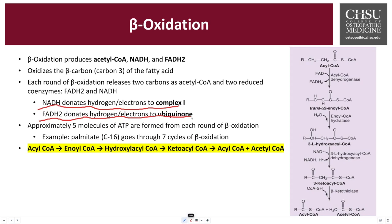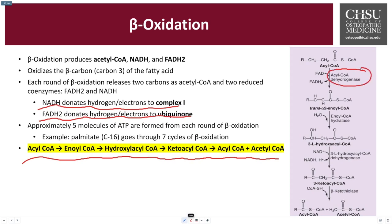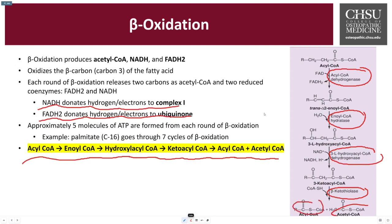The key reactants and products in the four-step reaction are: acyl-CoA becomes enoyl-CoA, then hydroxyacyl-CoA, then ketoacyl-CoA, and eventually becomes acyl-CoA and acetyl-CoA. The key enzymes are: acyl-CoA dehydrogenase converts acyl-CoA to enoyl-CoA; enoyl-CoA hydratase converts enoyl-CoA to hydroxyacyl-CoA; hydroxyacyl-CoA dehydrogenase converts hydroxyacyl-CoA to ketoacyl-CoA; and ketothiolase converts ketoacyl-CoA to acyl-CoA and acetyl-CoA. Acetyl-CoA enters the Krebs cycle, and acyl-CoA undergoes another round of beta-oxidation.